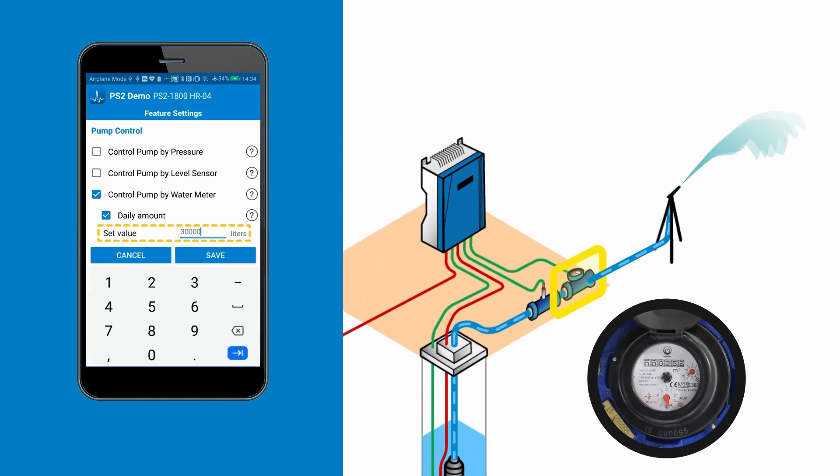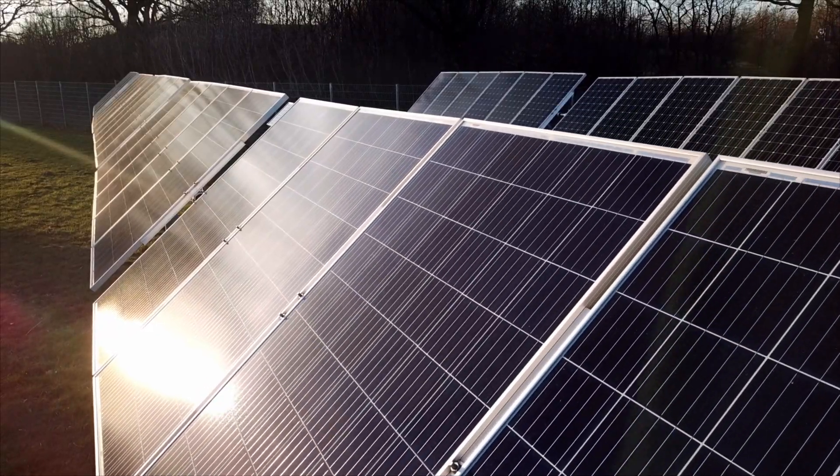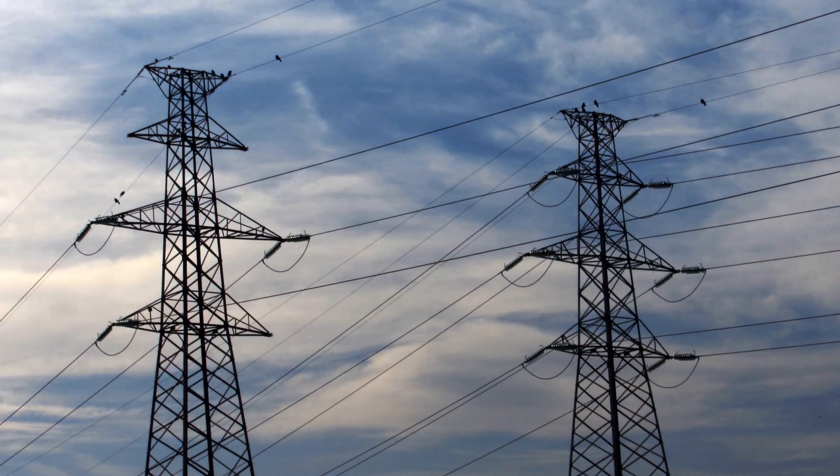You simply set a daily amount and when the daily amount is reached, the pump will stop. The daily amount feature works really well in hybrid pumping situations. The water is pumped by solar and if the daily amount cannot be achieved by solar, then the remainder is topped up from grid or generated power automatically.